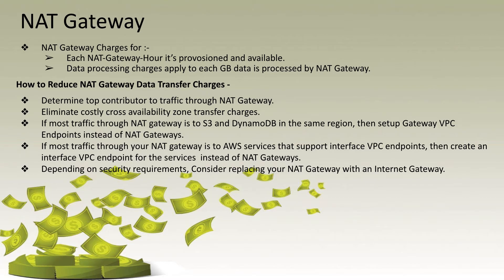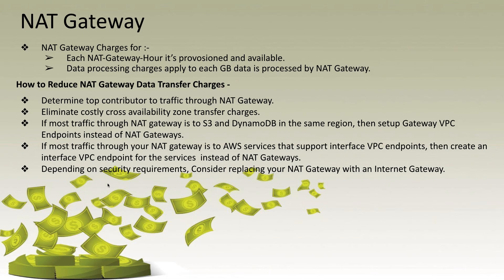The next thing to check is whether most of your traffic through the NAT gateway is to AWS services that support interface VPC endpoints. If so, you can start using interface VPC endpoints for those services instead of routing through the NAT gateway. Although interface VPC endpoints do have charges, they are at cheaper prices compared to NAT gateway charges. Using these tips, you can definitely reduce your NAT gateway costs.